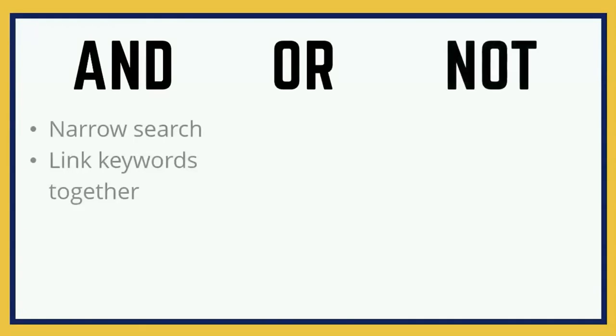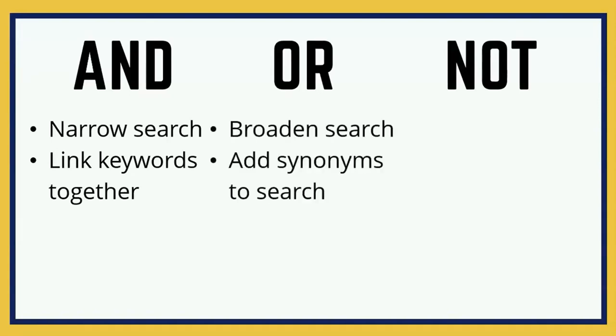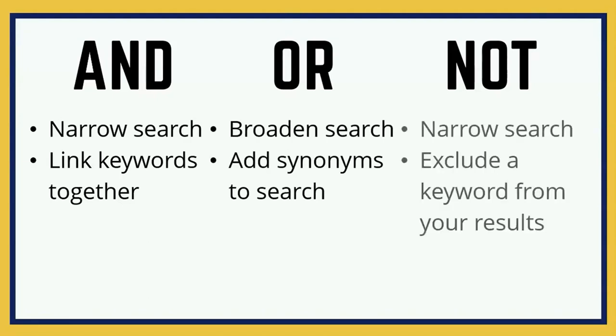To summarize, this video has talked about the use of three different Boolean operators: AND, OR, and NOT. The AND operator is used to narrow your search and to link different concepts together. The OR operator is used to broaden a search and to add synonyms to your search. Finally, the NOT operator is used to narrow your search and to exclude a keyword from your results.